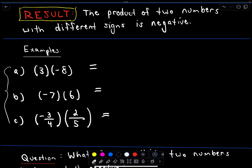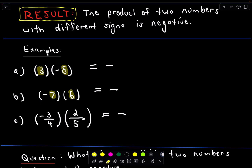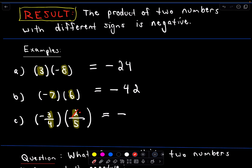Notice in all of my examples — A, B, and C — in each case, one of the numbers is positive and one is negative. So I know that when I multiply them, I'm going to get a negative number. After that, I just forget about the signs and think: what's three times eight? What's seven times six? What's three-fourths times two-fifths? For the first example, three times eight is 24 — negative 24. Seven times six is negative 42. And for the fraction, I can cancel factors: two divided by two is one, four divided by two is two, so three times one over two times five gives me negative three over ten.